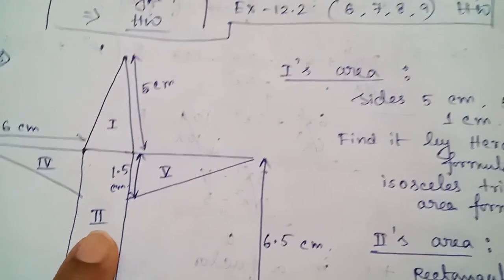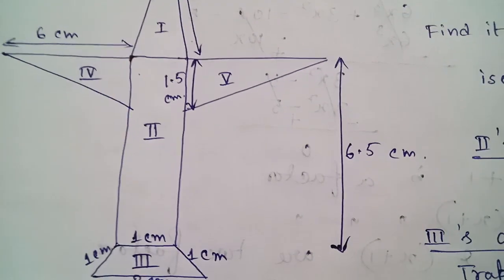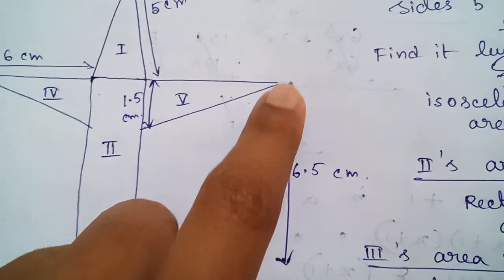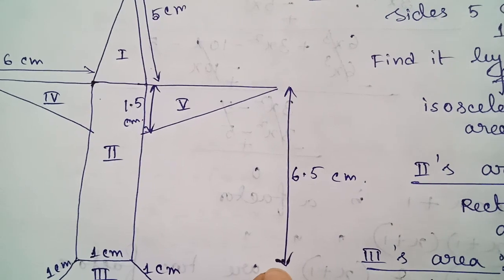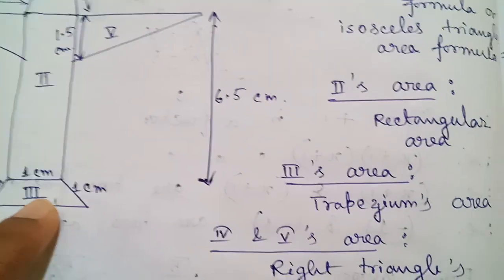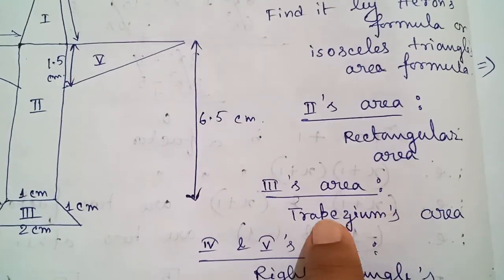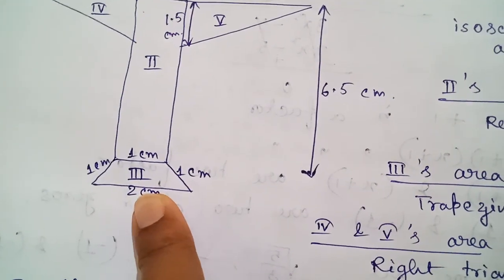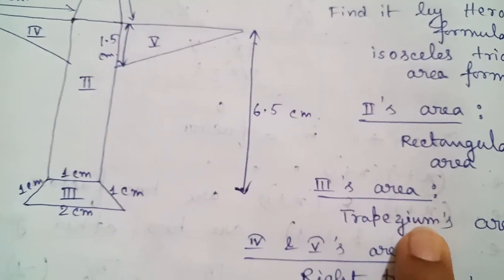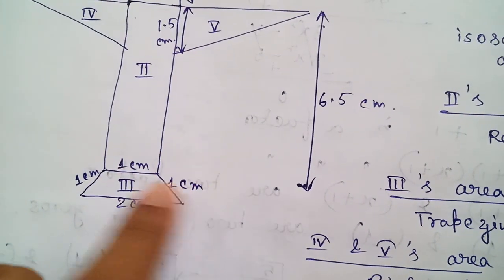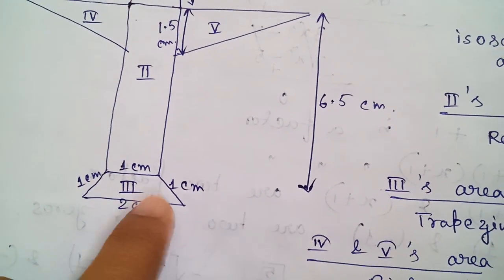Coming to the second part, it is a rectangle. The second part's area will be rectangular area where the rectangle's length is 6.5 centimeters and the breadth is 1 centimeter. Coming to number three, this area is a trapezium, which you have all done in Class 8 — the same type of question. So I haven't done it here separately.